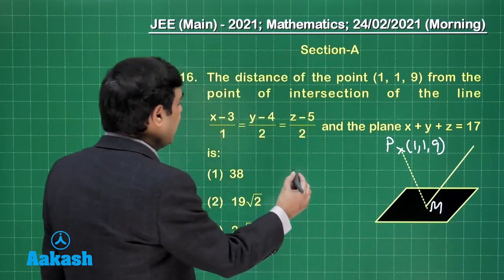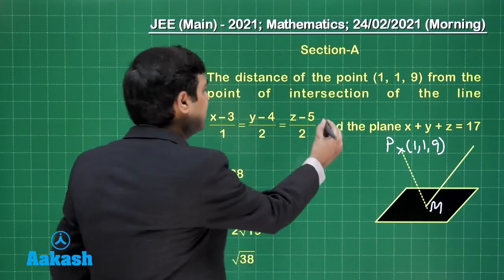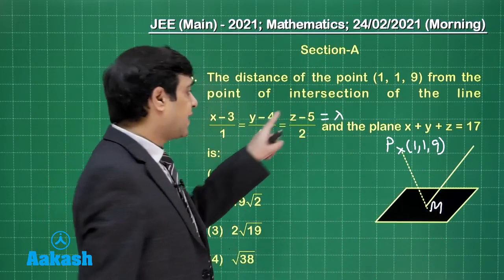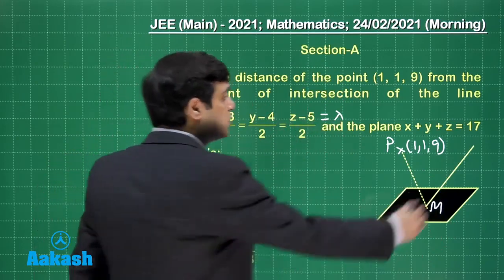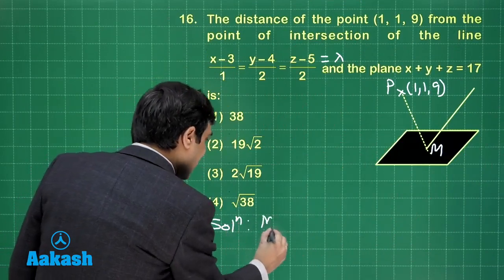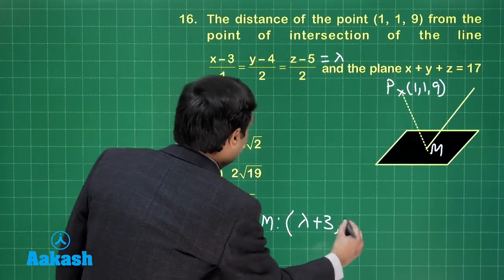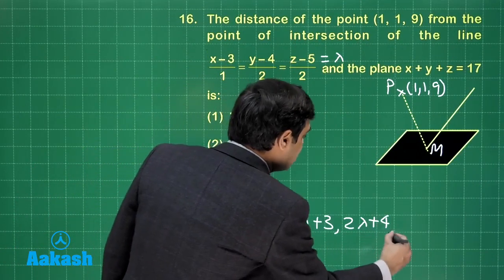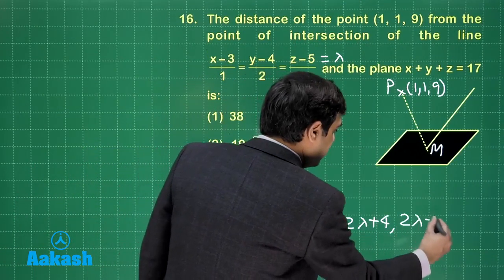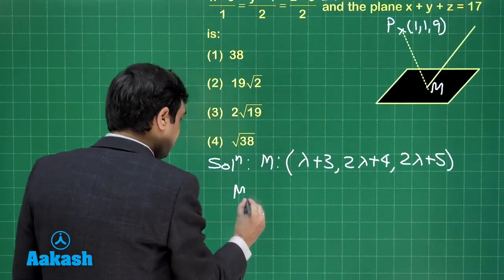So how to approach for it? We start by considering, say this point is P and this point is say M. Now we can write the coordinates for M. How? By considering this is equal to lambda. So we can get the general point. So let us start this question. Coordinates for M can be written as lambda plus 3, 2 lambda plus 4, 2 lambda plus 5. M lies on the plane.